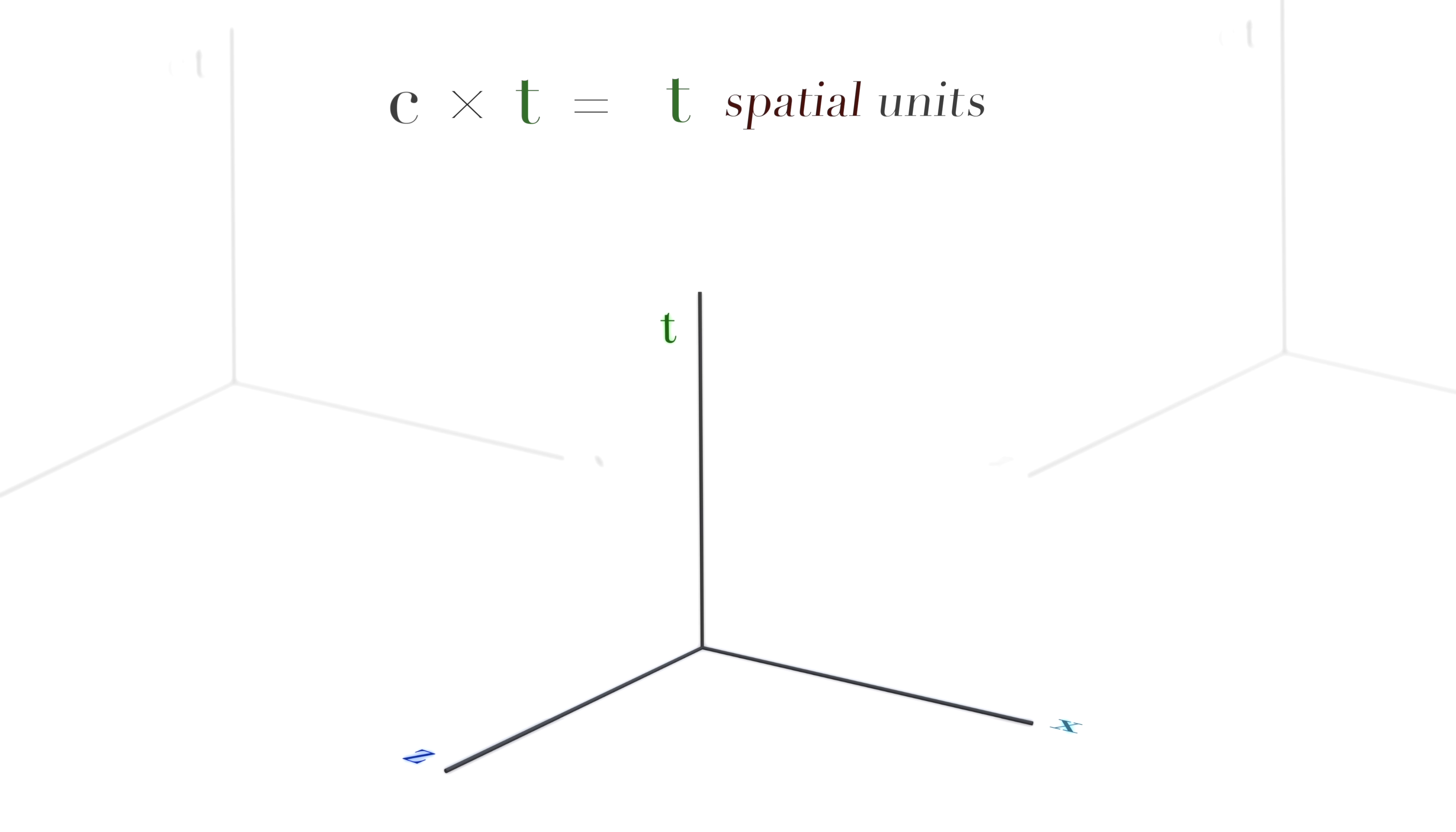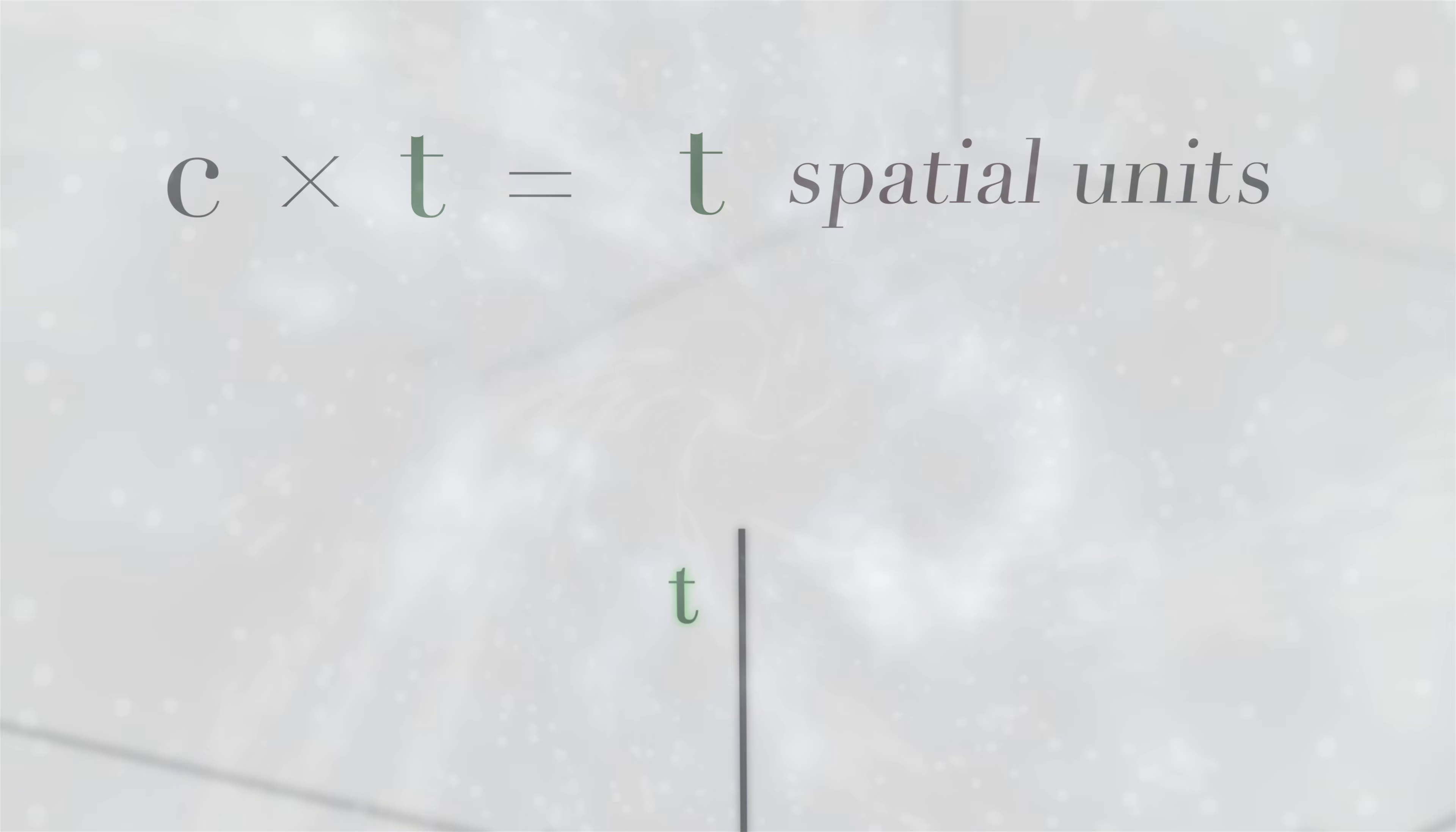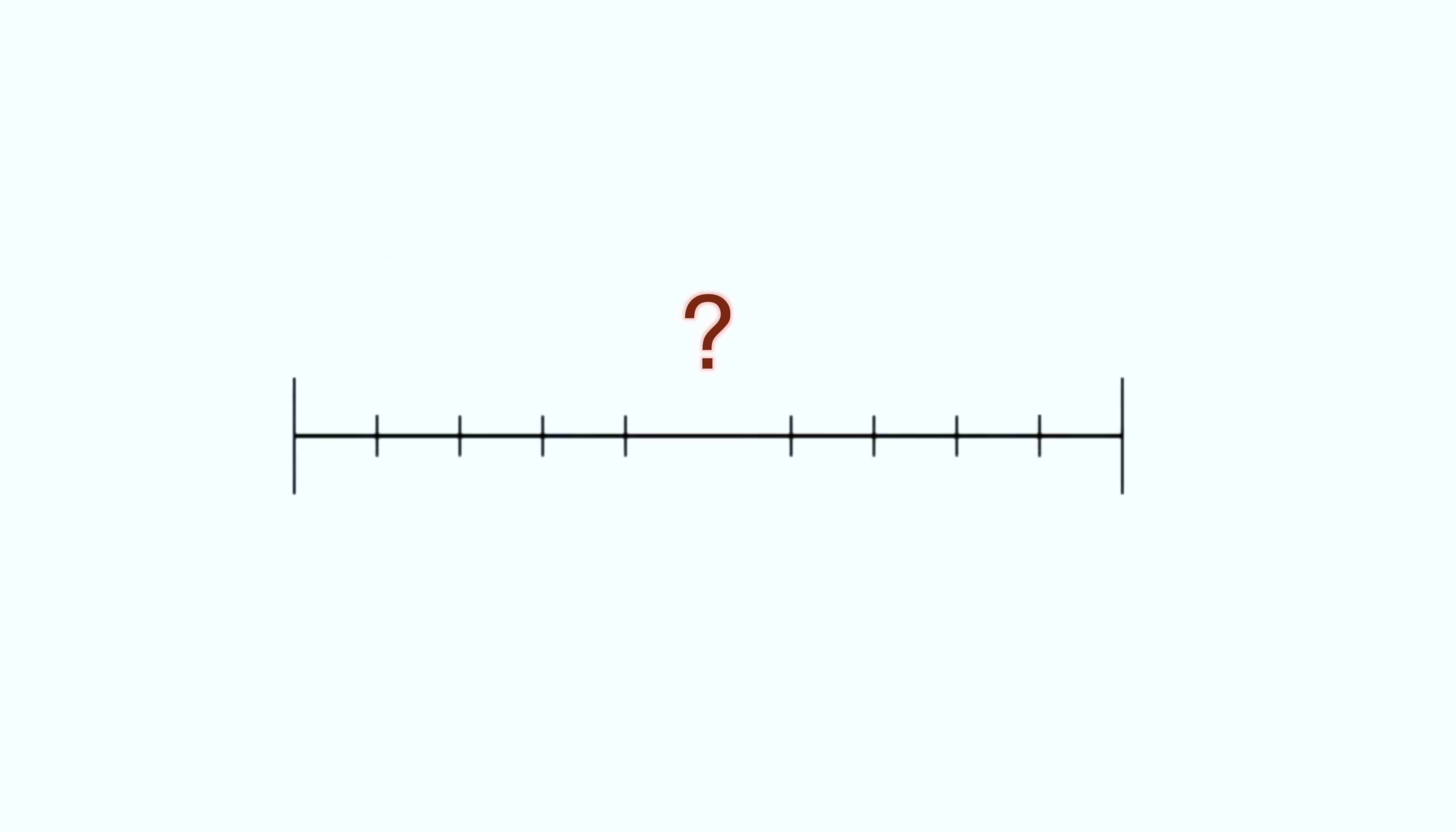And there you have it. The fourth dimension of our space-time manifold isn't a temporal dimension at all. It's another dimension of space. But the space of what, exactly?